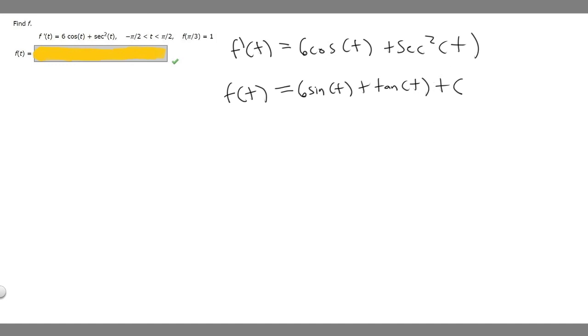And so basically what they're asking us for is this equation but with c plugged in. So we need to solve for c. We can solve for c by using this right here. They tell us that f of pi over 3 is equal to 1. So if we just plug in pi over 3 and set it equal to 1, we can solve for c.